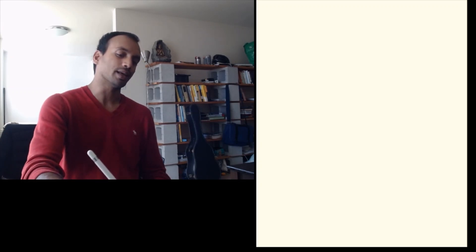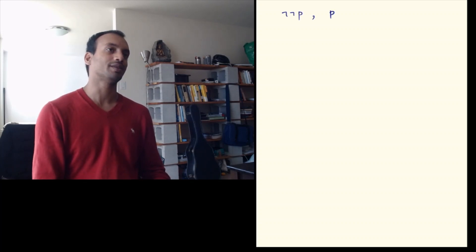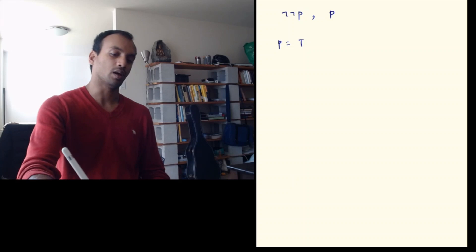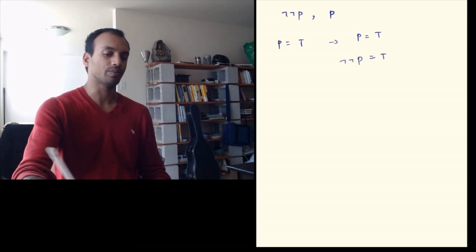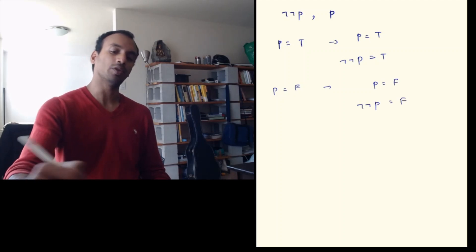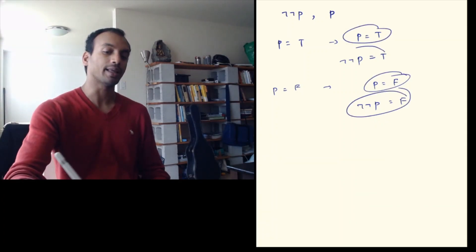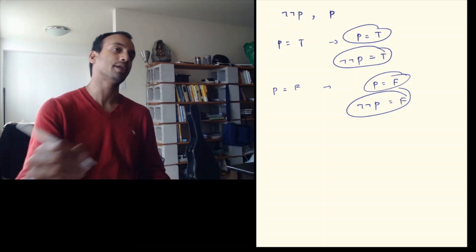We saw an example where equivalence does hold in the previous video: ¬¬p and p. No matter what truth value p has — if p is true, then ¬¬p is also true; if p is false, then ¬¬p is also false. In both possibilities you get p and ¬¬p taking the same value, which is why we can say p and ¬¬p are equivalent.